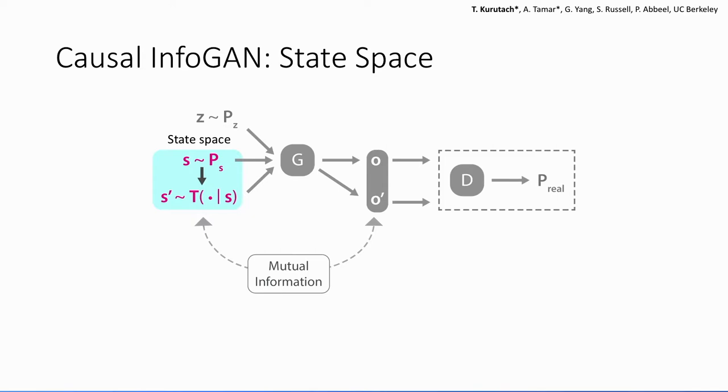Now let's take a look at the state space again. We have seen that we can learn the continuous representation in the latent space before in the rope example. Now we ask, can we do something even more general?